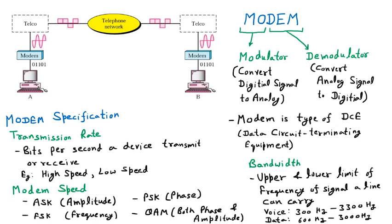Depending on transmission rate, modem speed, and bandwidth, we purchase the modem. Now we look at the diagram. We start with two computers: Computer A, which is my computer, and Computer B, which is your computer. Both Computer A and Computer B generate digital data — represented as 0s and 1s — and both systems work on digital data.